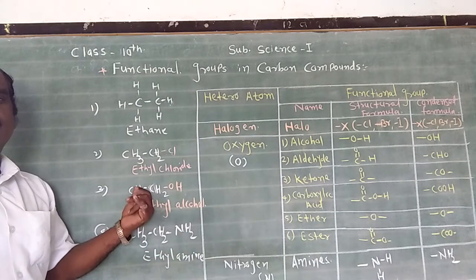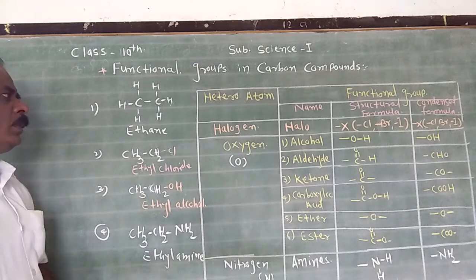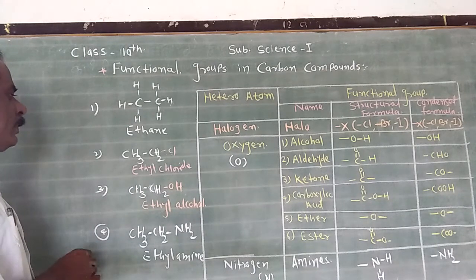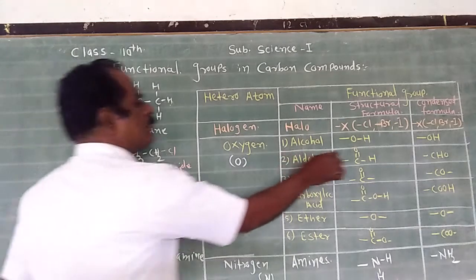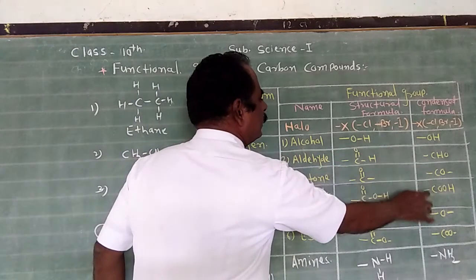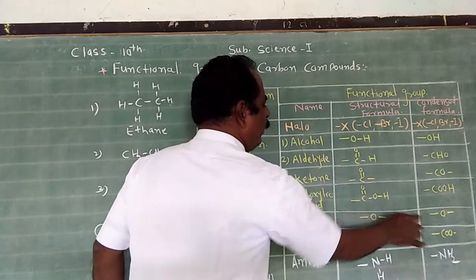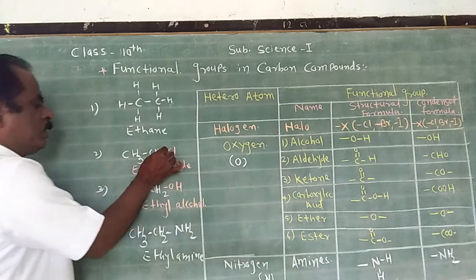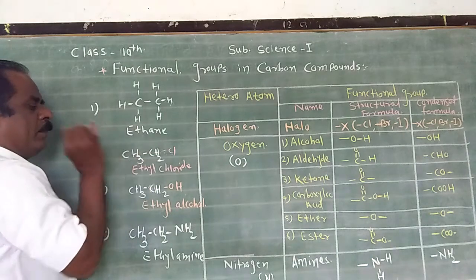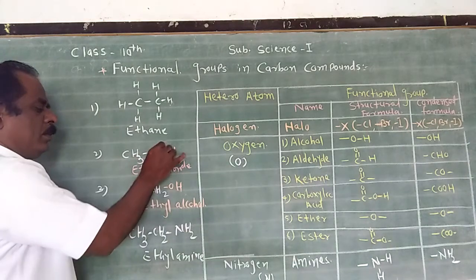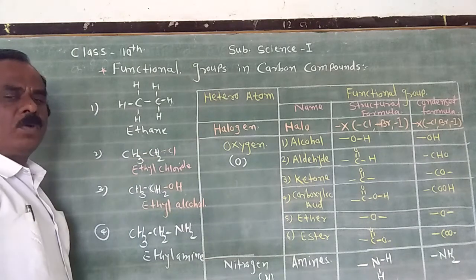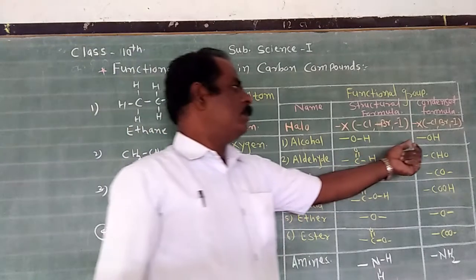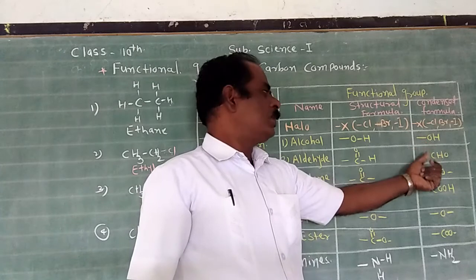Remember that the free valency of a functional group is represented by a single short line. This free valency is directly attached to the carbon atom in the formation of the new compound. This bond indicates the free valency of the functional group.